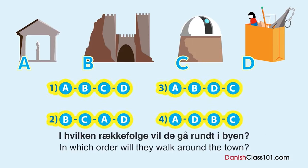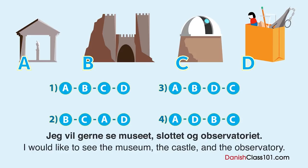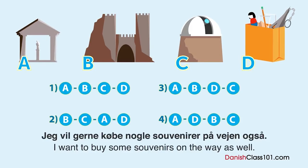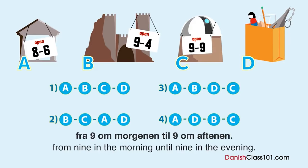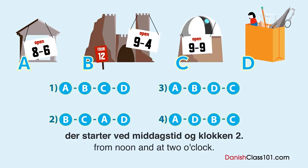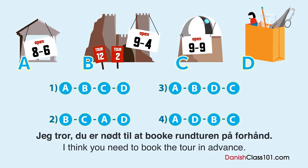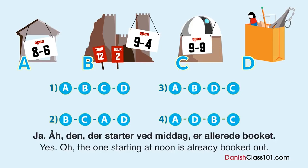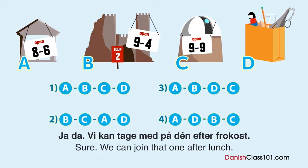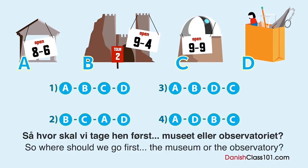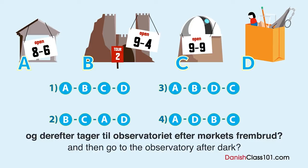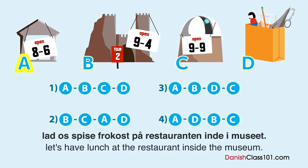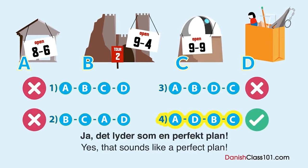I hvilken rækkefølge vil de gå rundt i byen? Vi vil gerne se museet, slottet og observatoriet. Museet er åben fra 8 til 18, slottet fra 9 til 16, observatoriet fra 9 til 21. Slottet har en særlig rundvisning ved middagstid og klokken to - rundturen ved middag er allerede booket, så vi booker klokken to. Vi spiser frokost på restauranten inde i museet og køber souvenirs inden slotsrundturen starter. Jeg vil rigtig gerne se udsigten om aftenen - hvad hvis vi tager til observatoriet efter mørkets frembrud? God idé - det lyder som en perfekt plan.